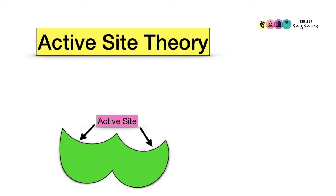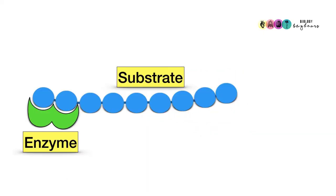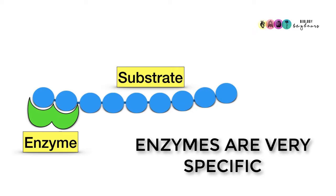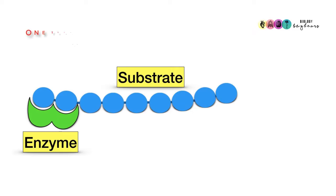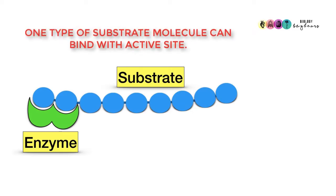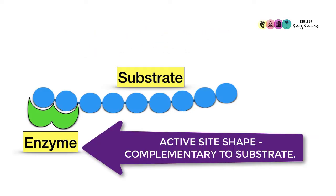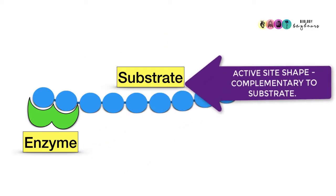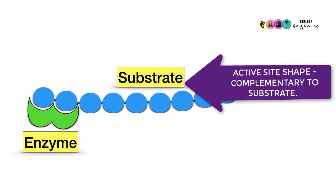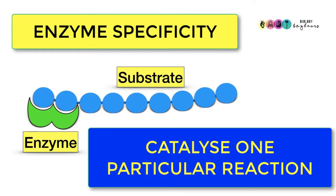Each particular type of enzyme has its own uniquely shaped active site. This is the reason why it will only catalyze one type of reaction. Why? Because only one type of substrate molecule, the molecule that's going to get changed, can fit or bind with the active site of a particular type of enzyme. The active site of an enzyme, its shape is complementary to the substrate molecule. This explains enzyme specificity.